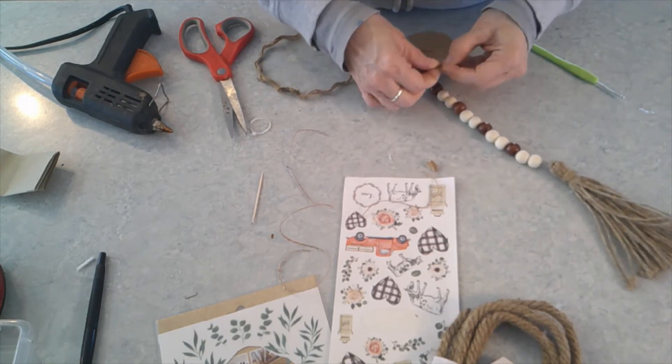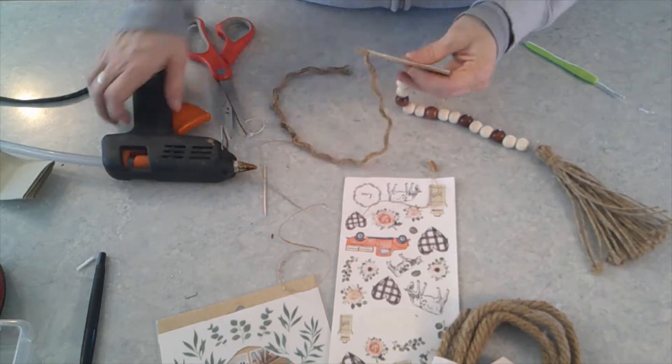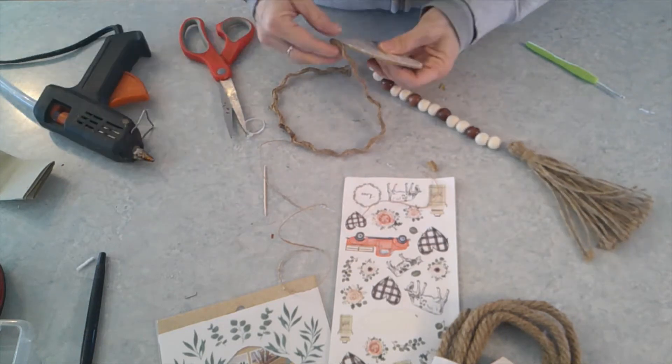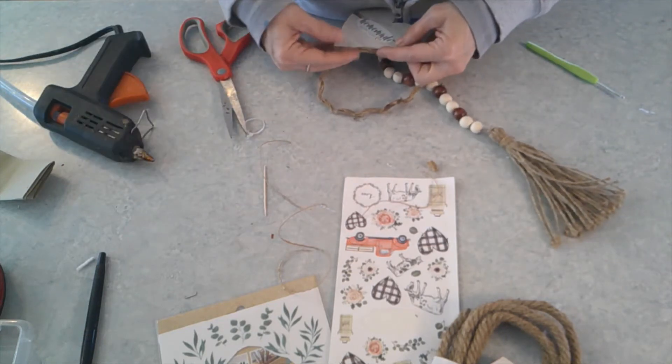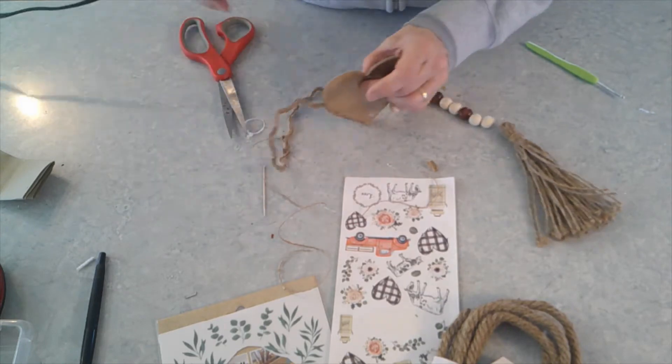I added jute string around the outside of the heart just to frame it out using hot glue to hold it in place and that was it. It looks super cute on my tier tray and I hope you guys try one of your own.